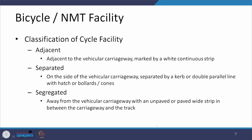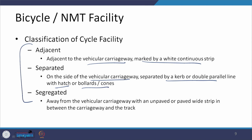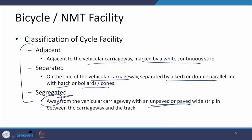To summarize the classification: adjacent means provided along the vehicular carriageway, marked by a white continuous strip. Separated means provided beside the vehicular carriageway but separated by curb stone, parallel line markings, hatchings, bollards, or cones. Segregated means located away from the vehicular carriageway, and the separation space between the two carriageways — one for motorized vehicles, one for cyclists — can be either paved or unpaved.